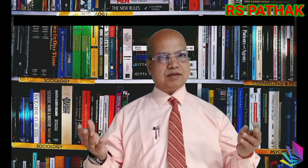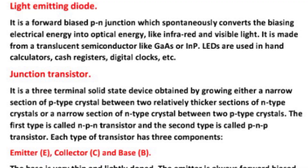Light emitting diode. What is a light emitting diode? It is a forward biased p-n junction which spontaneously converts the biasing electrical energy into optical energy like infrared and visible light. It is made from translucent semiconductors like GaAs or InP. LEDs are used in hand calculators, cash registers, and digital clocks.